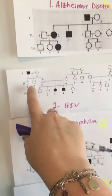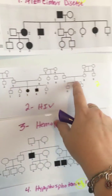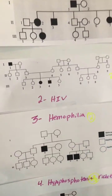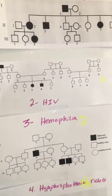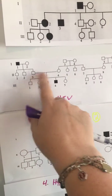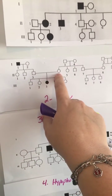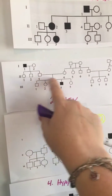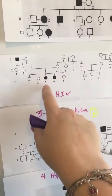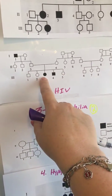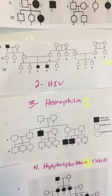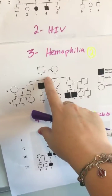In this second pedigree, it skips the whole second generation, which makes it obvious it's a recessive condition. When you look at just the parents, these two kids have it but the parents do not — that right there shows you it's going to be a recessive trait. It's also affecting both males and females, so this is going to be autosomal recessive.